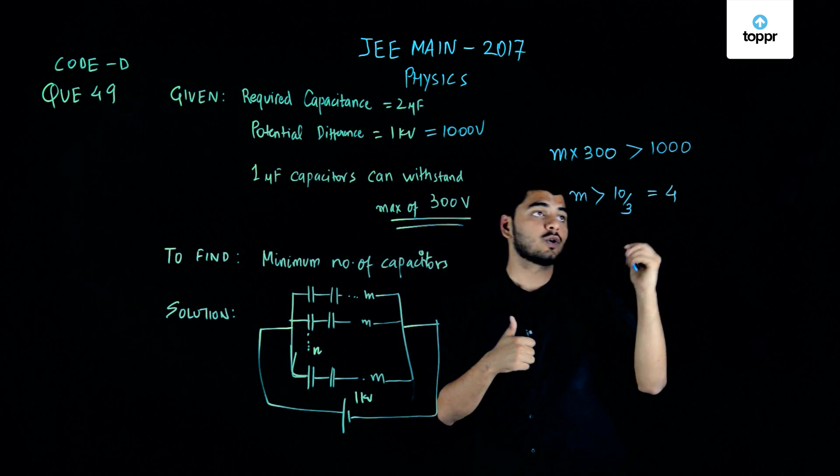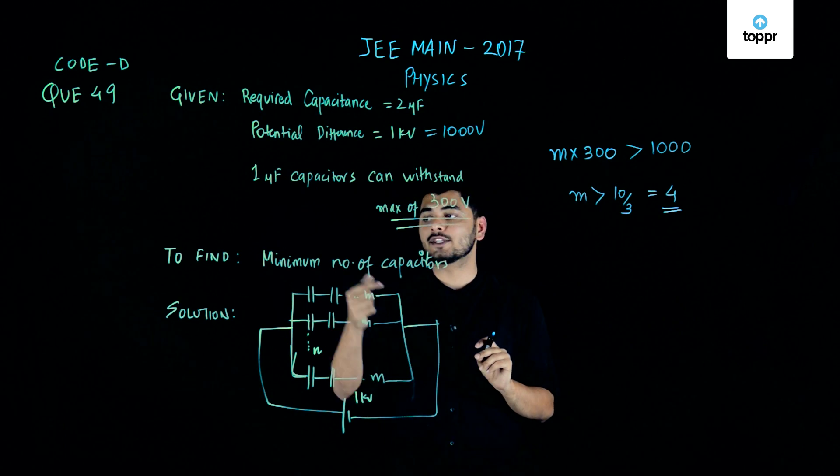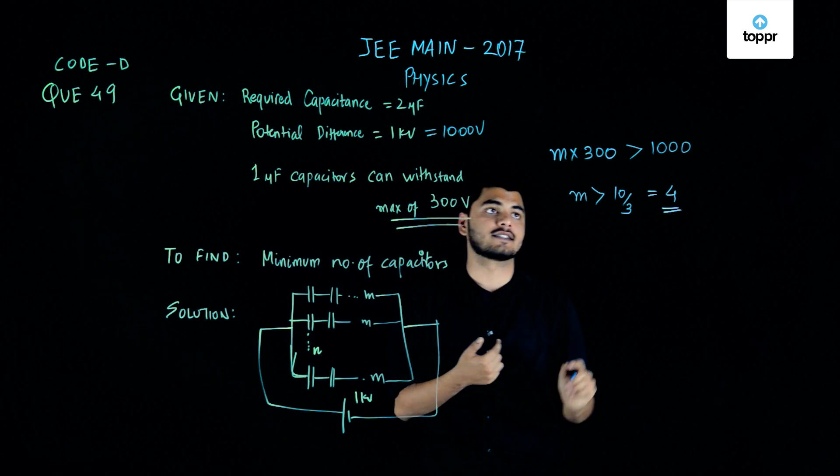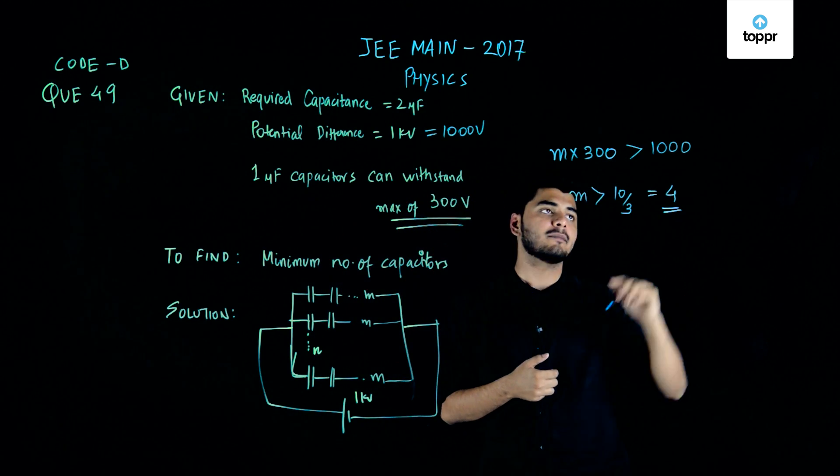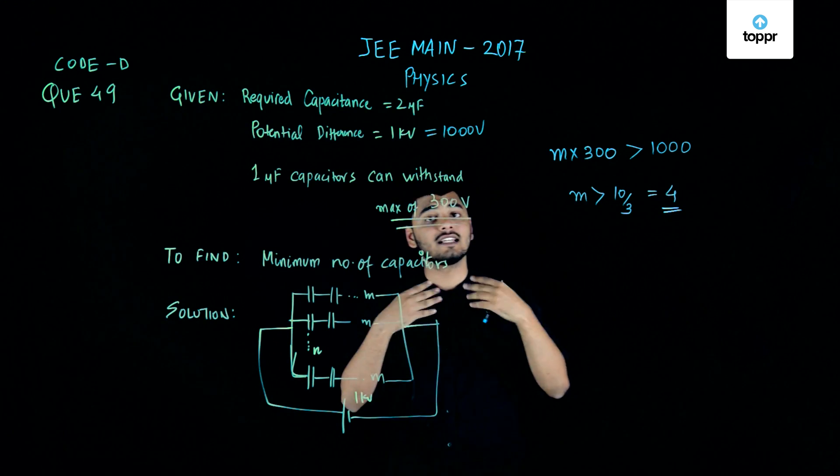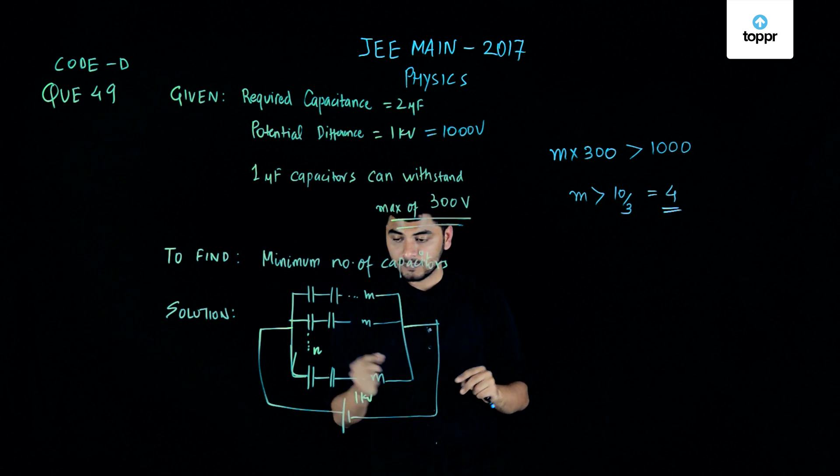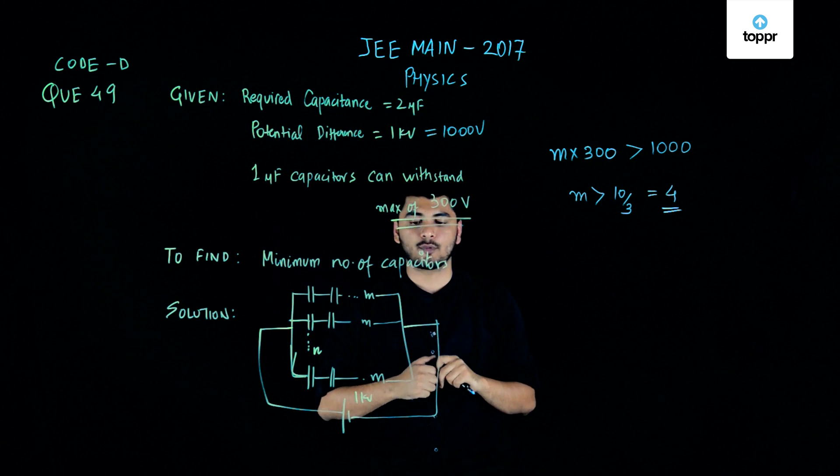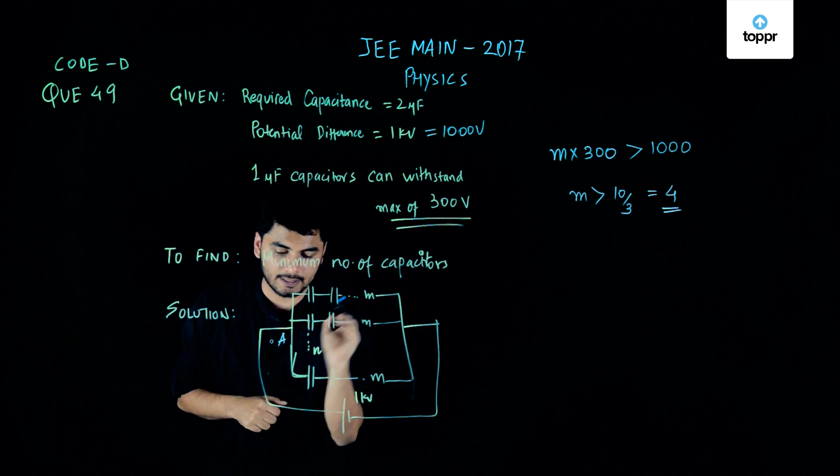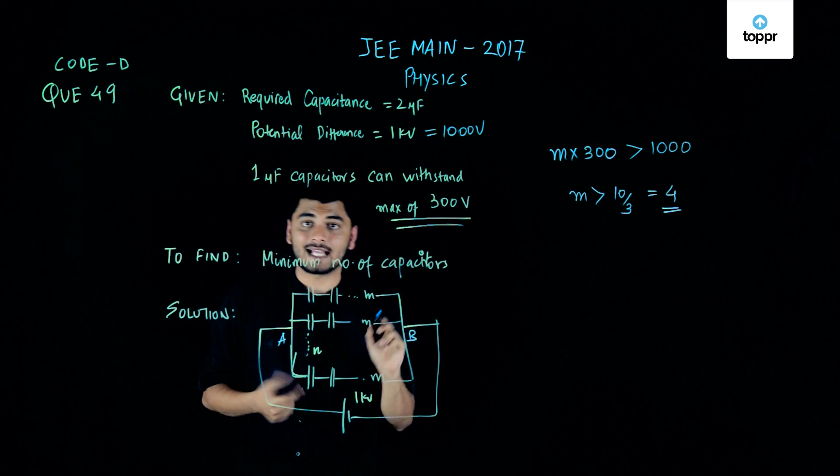Now please note that my m is equals to 4 only because I need to use the minimum number of capacitors. I can increase this value of m by 5, 6, 7 and it would still withstand the 1000 volts potential difference which is applied across these points. Let us name these points as A and B.